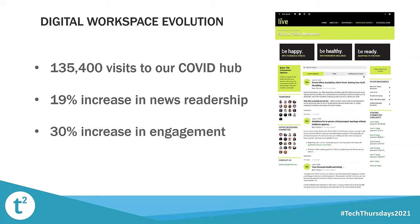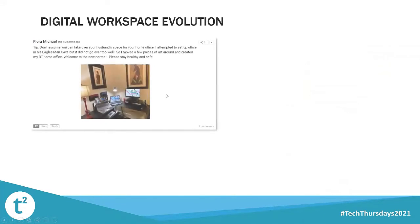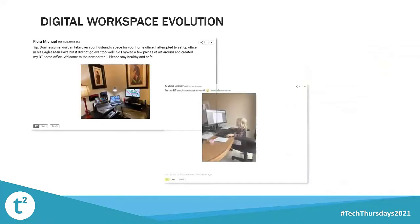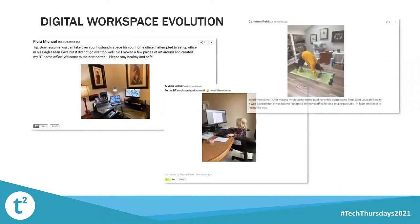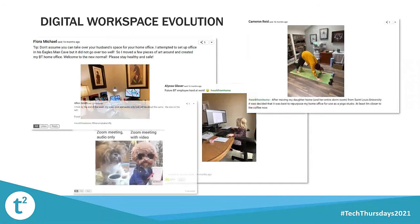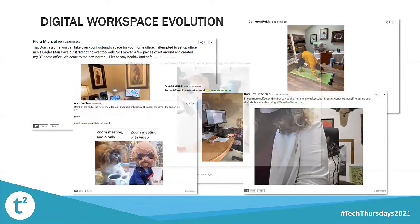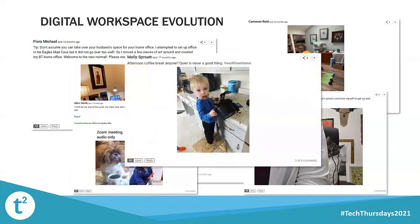We saw an increase of 19% in our news story readership and a 30% increase in engagement. Our social zones — the area where people can post photos of what they're doing — really became the new water cooler. As we shifted to working from home, it's where people connected, had conversations, found commiseration, and had a laugh.